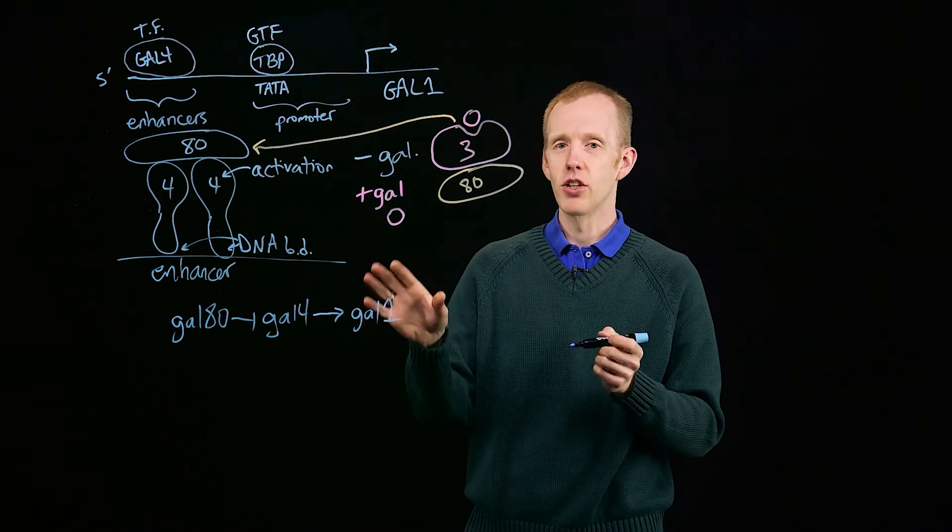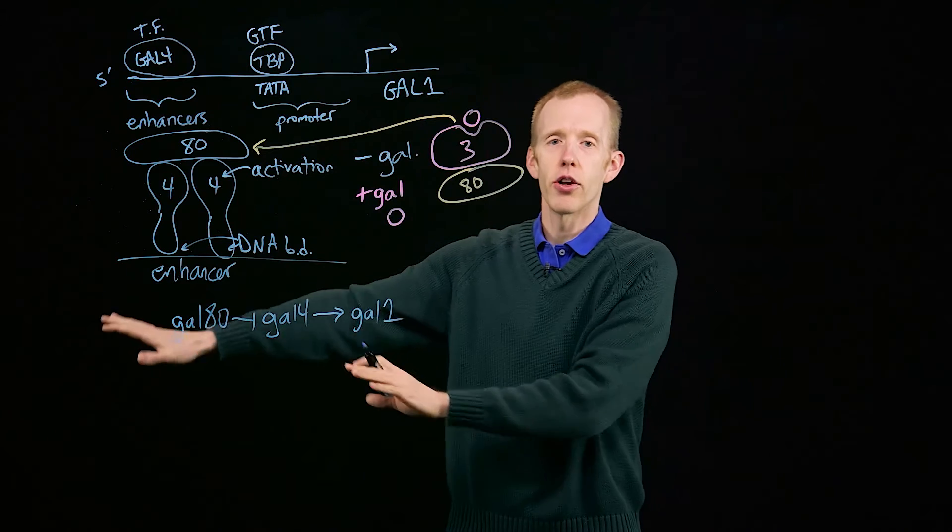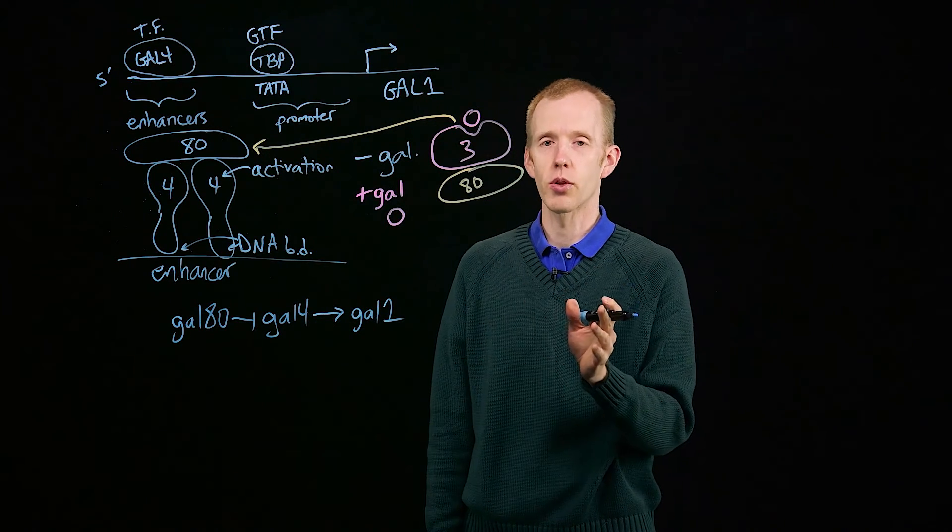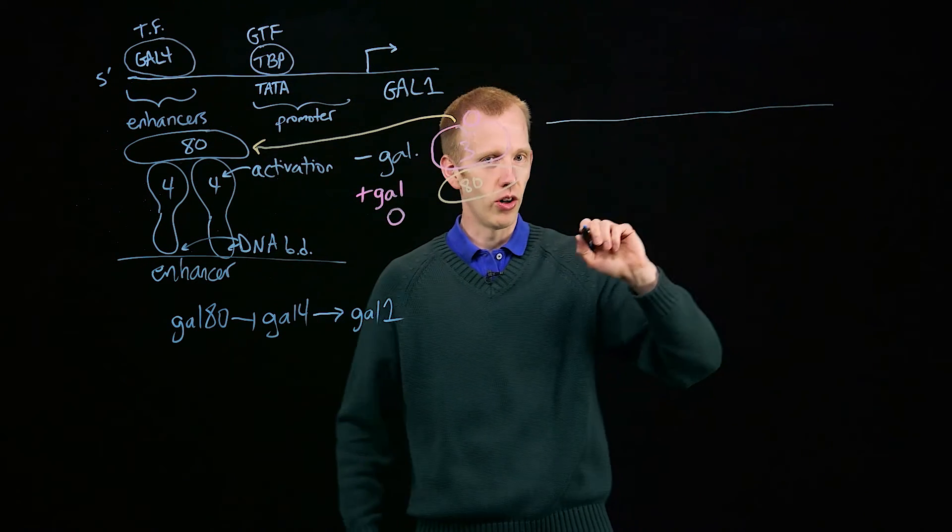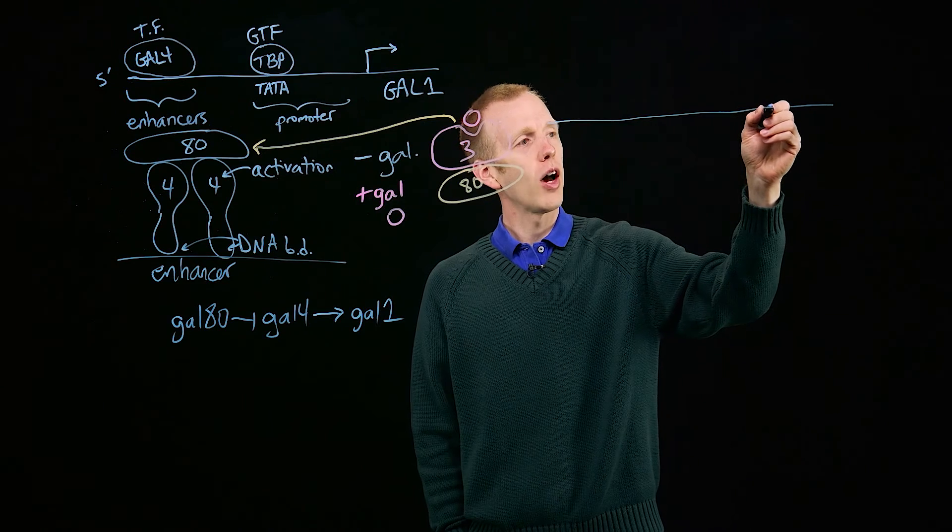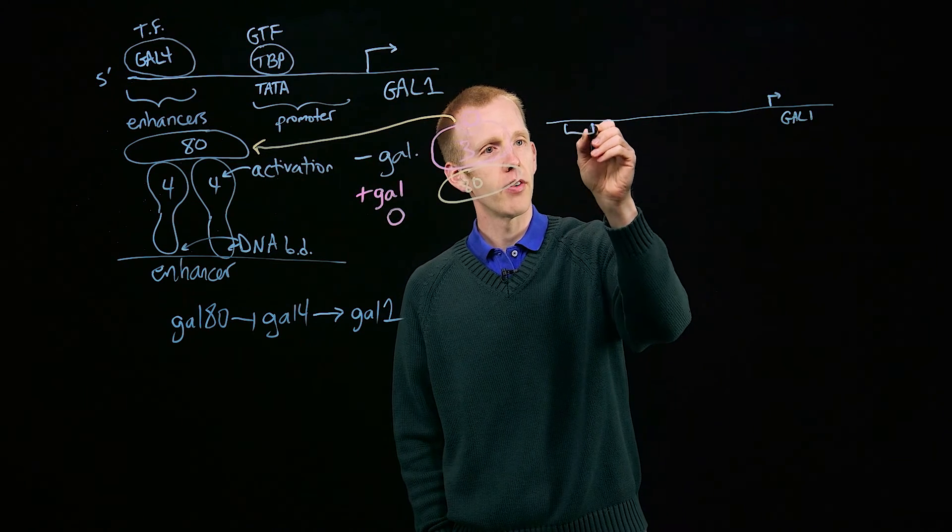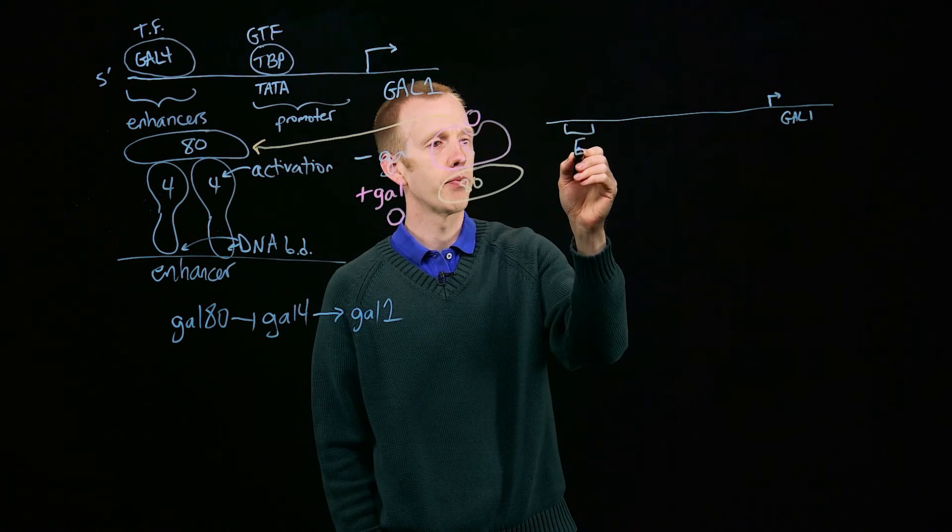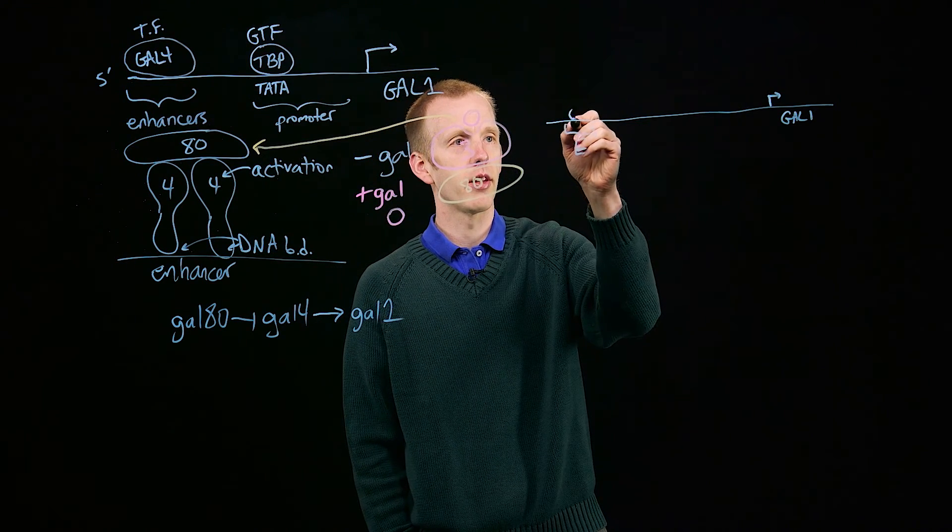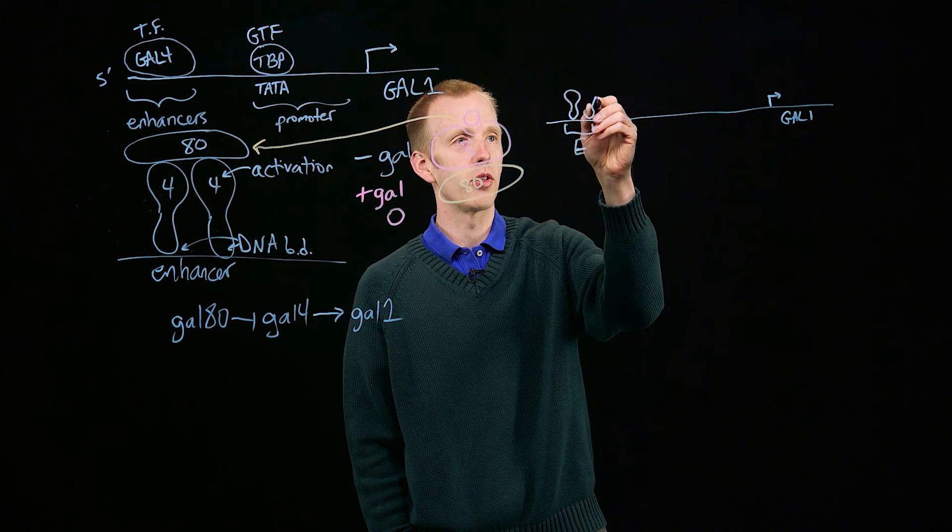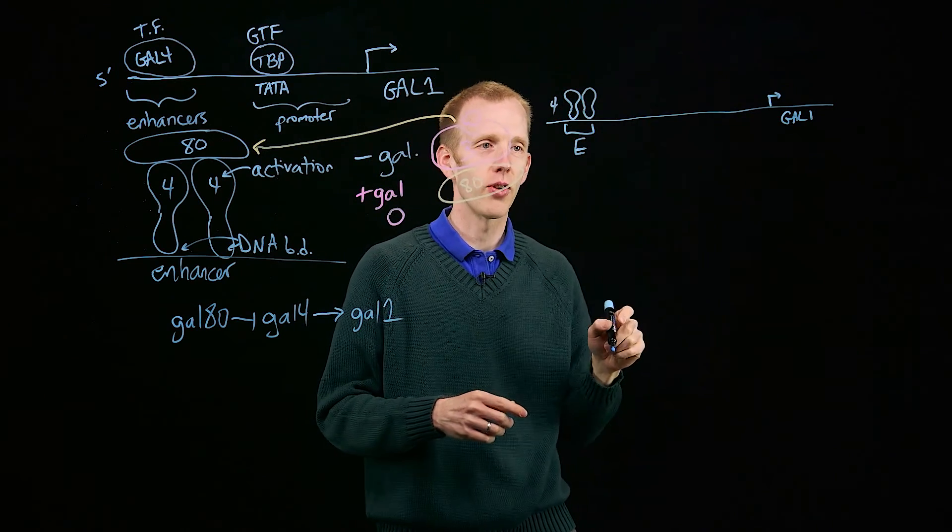The reason that it can do that, and the reason that these enhancers can be located thousands, tens of thousands, hundreds of thousands of base pairs upstream of the gene that they actually work on, is that eukaryotes have long, linear chromosomes. The GAL1 gene might be here, and the enhancer might be tens or hundreds of thousands of base pairs upstream. With GAL4 now released from its repressive interaction of GAL80, we've got GAL4 ready to enhance transcription.